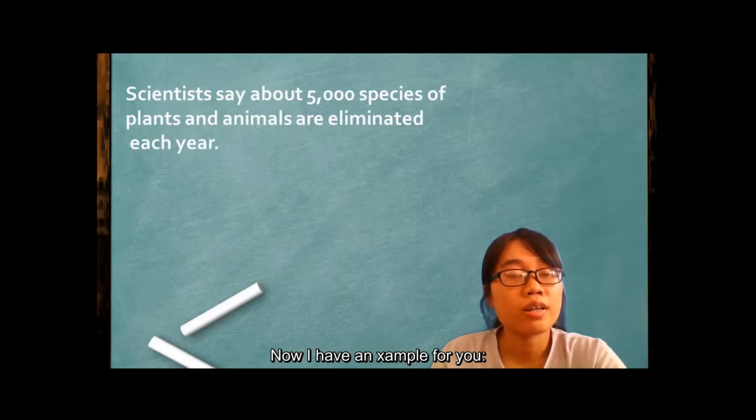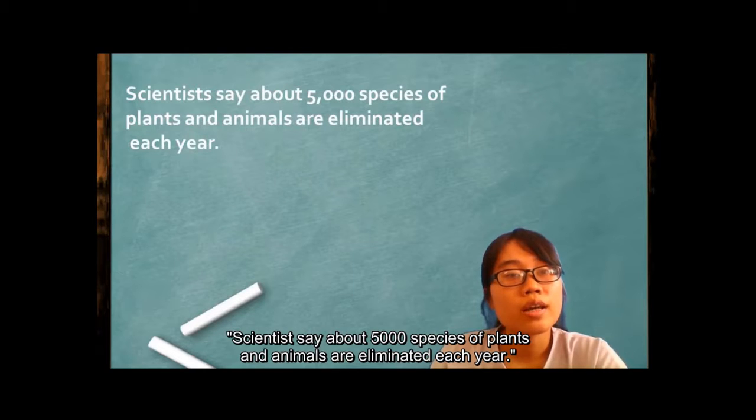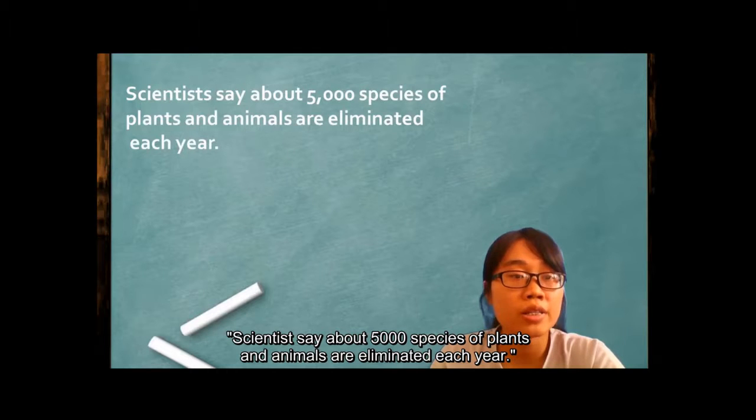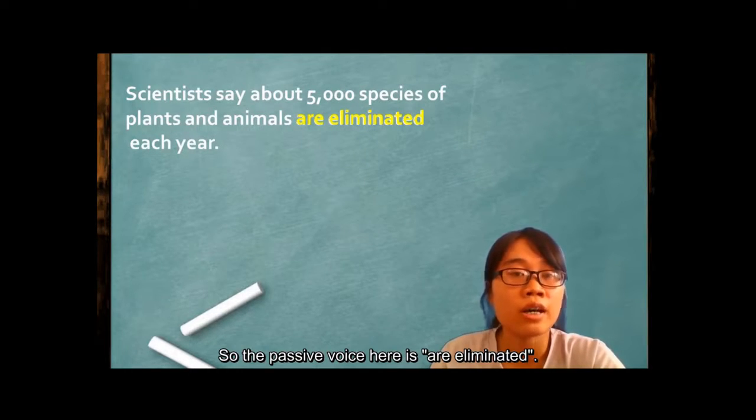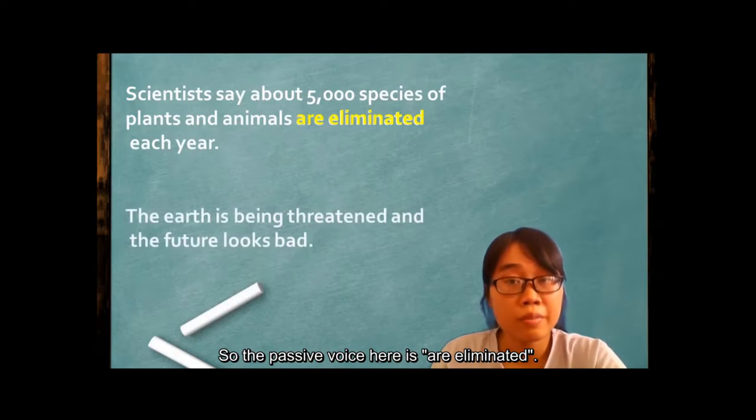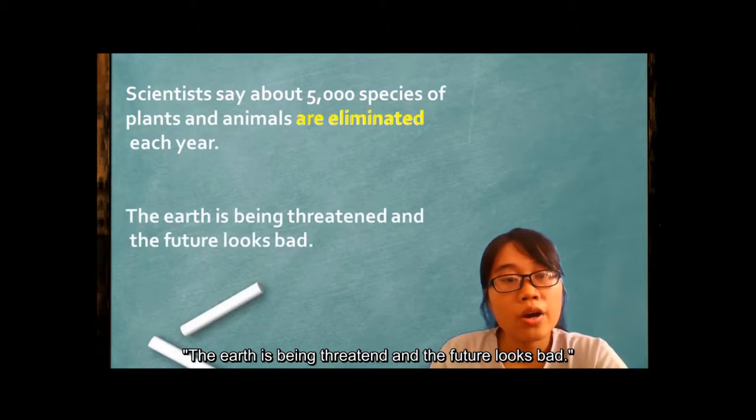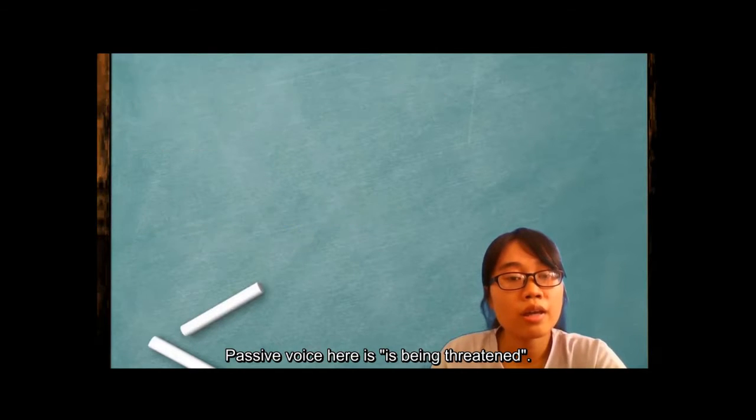Now I have an example for you. The scientists say about 5,000 species of plants and animals are eliminated each year. So the passive voice here is are eliminated. The earth is being threatened and the future looks bad. The passive voice here is being threatened.